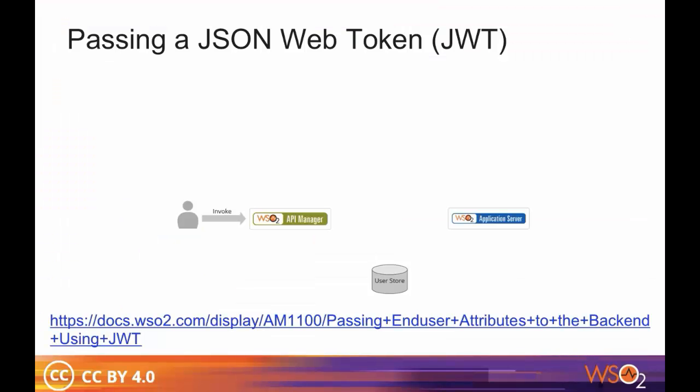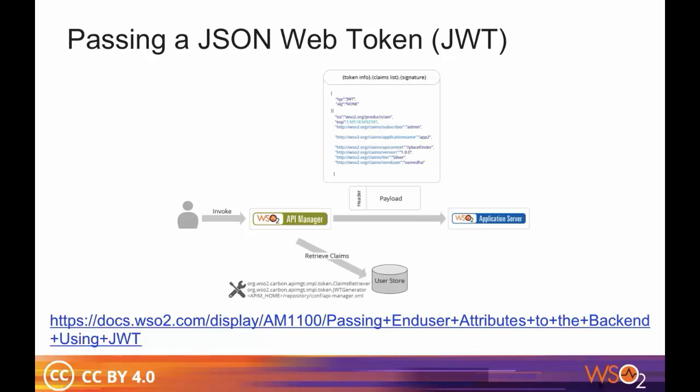When a request comes to the API gateway, it retrieves the claims needed and builds a JWT which is added to the header of the back-end service request. The back-end uses this token to do the necessary validations.